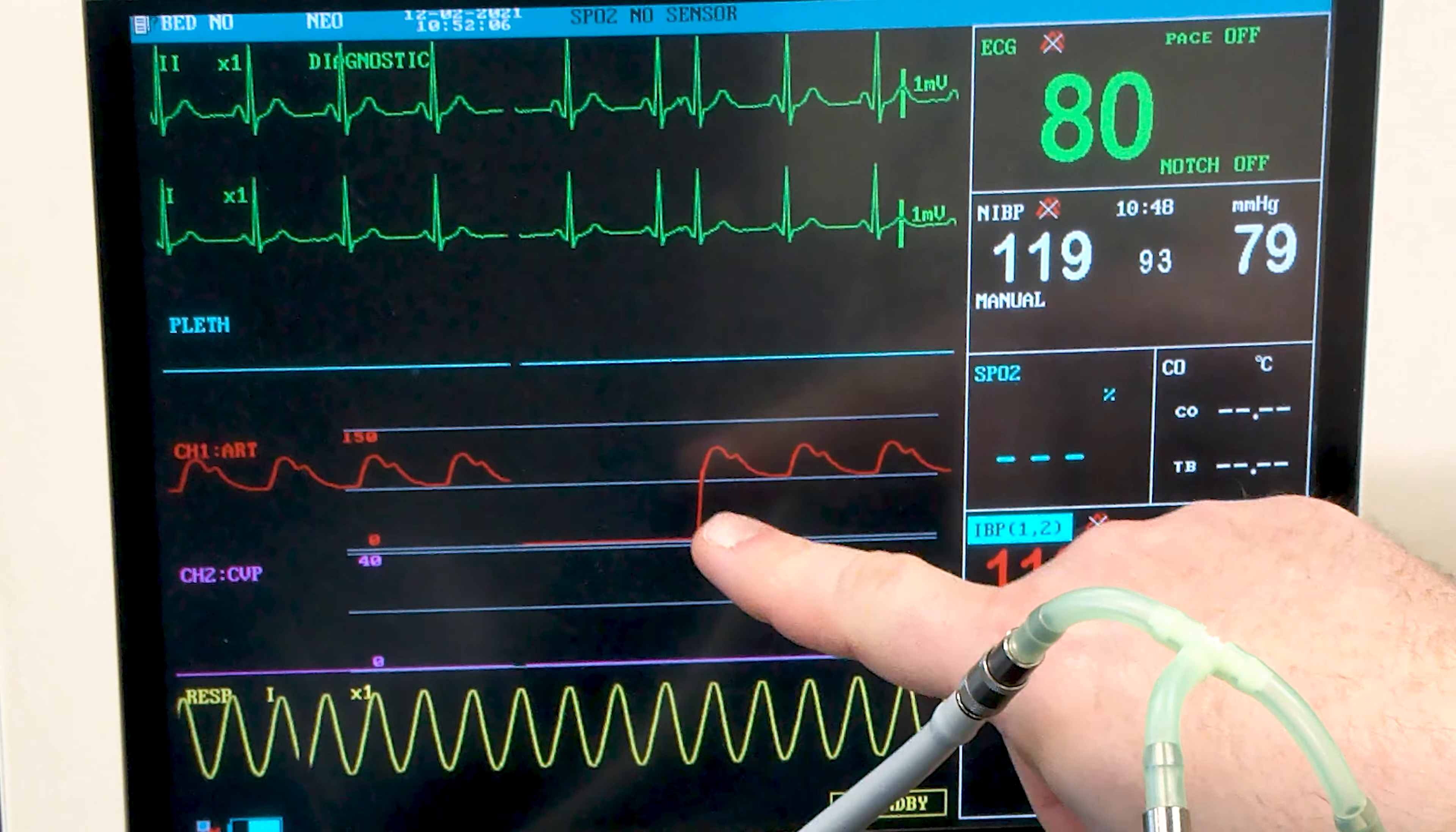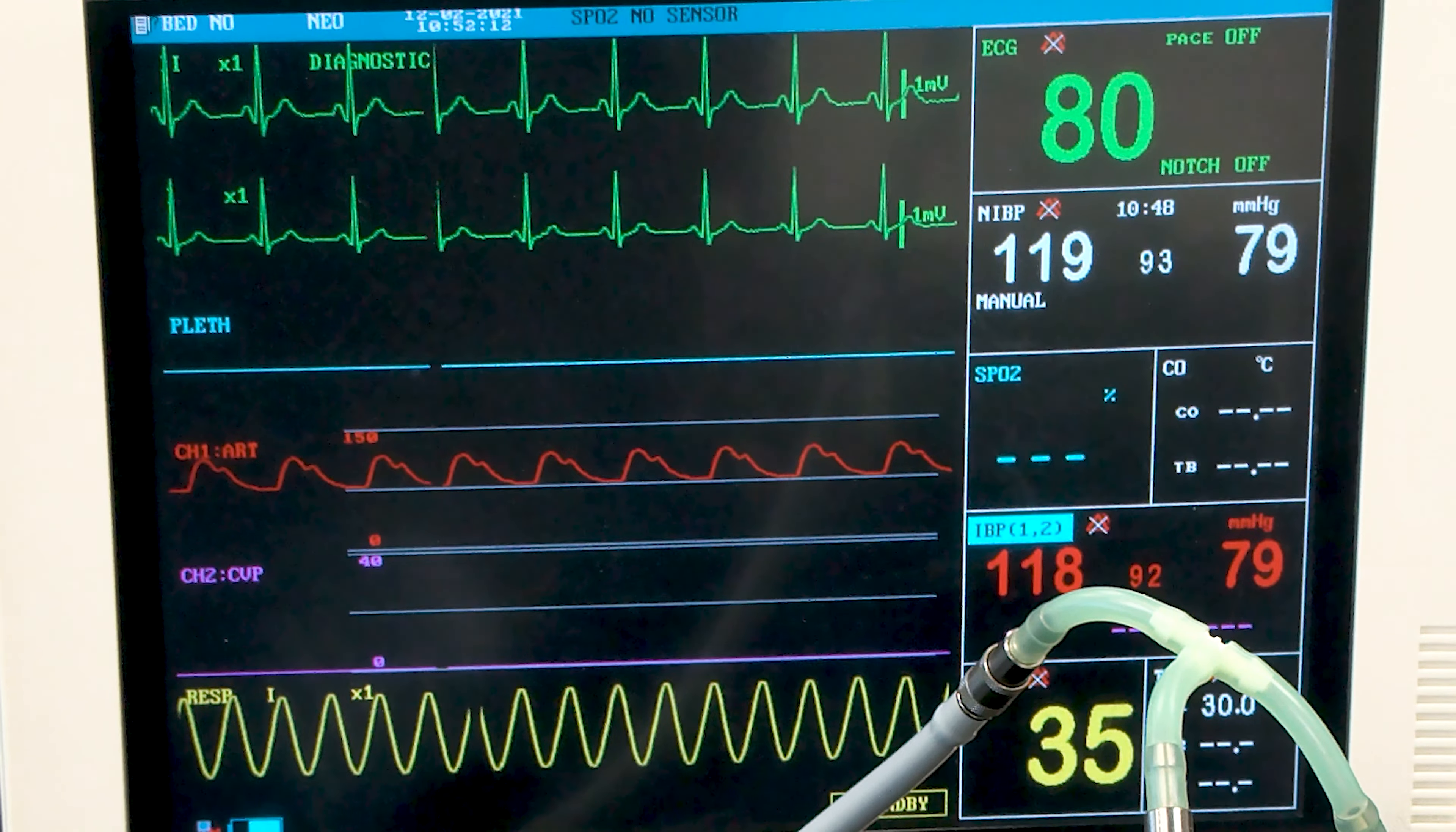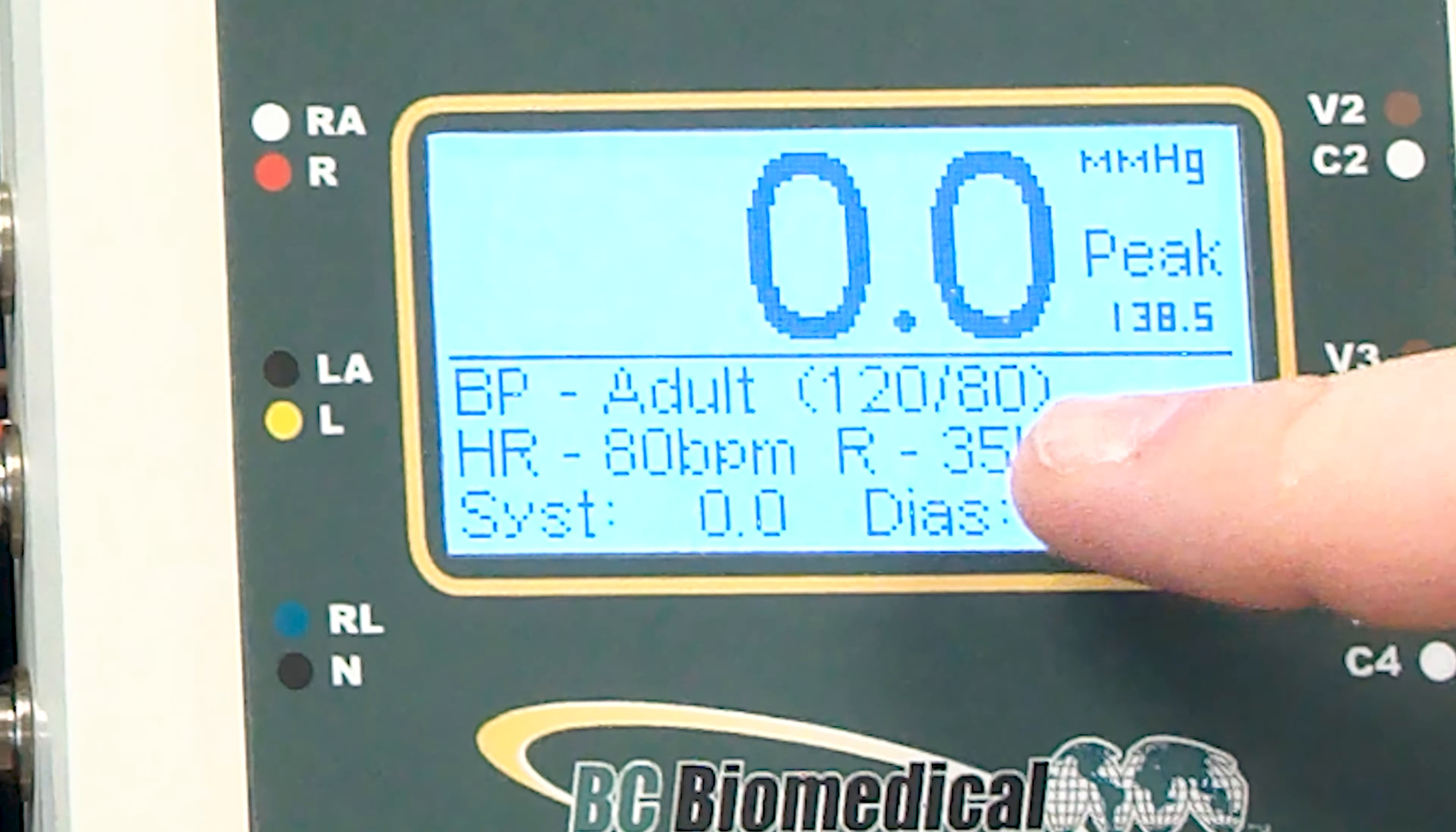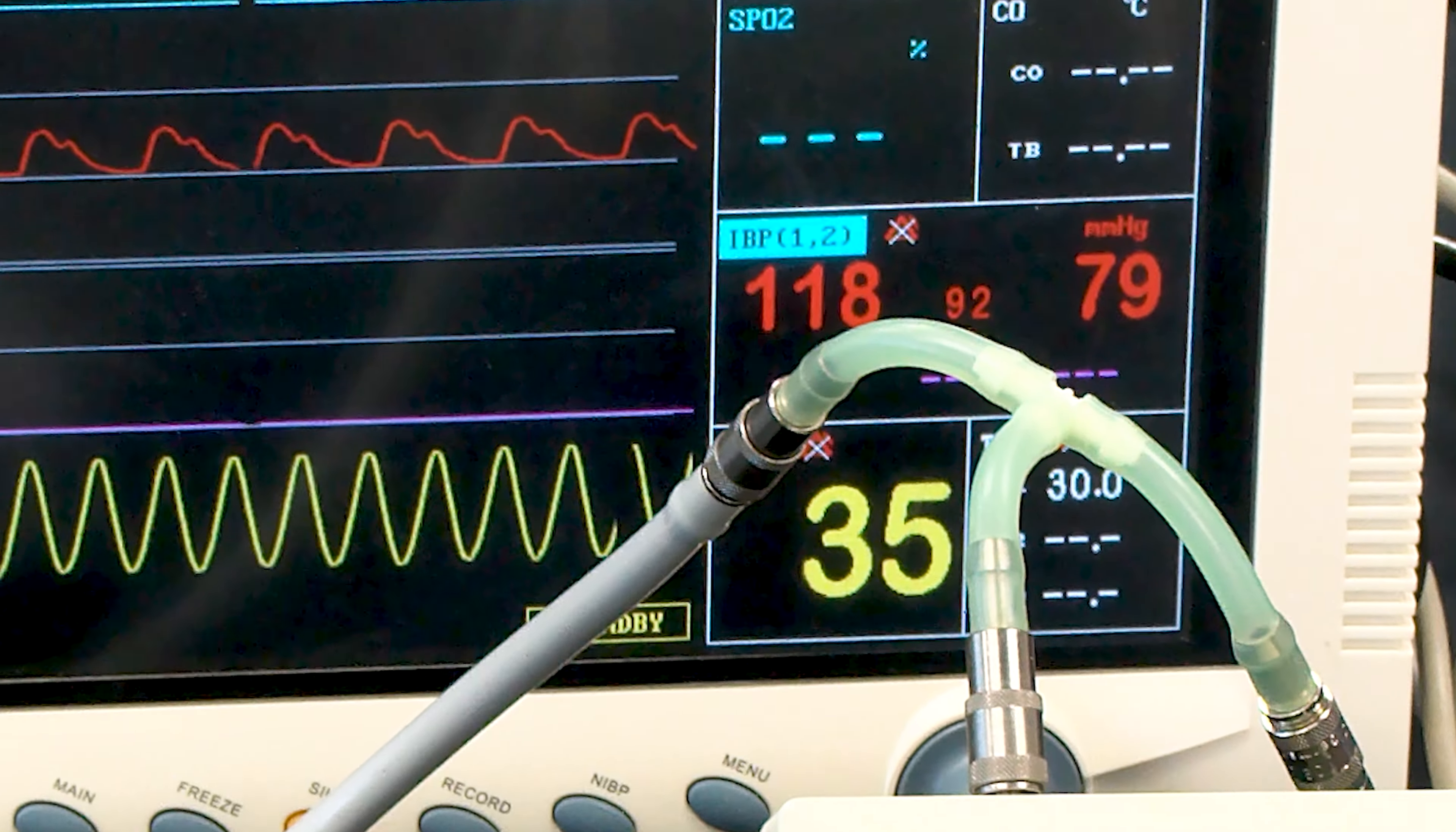we'll be simulating dynamic blood pressure that is synchronized with the ECG and the NIBP pulses. So here we have set for 120 over 80 for the NIBP and the IBP as well, and in this case we have 118 over 79 displayed on the monitor.